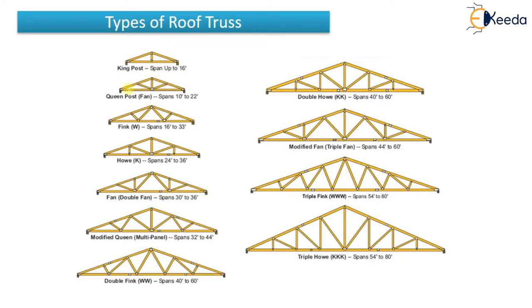Let's see which span requires which type of truss. The King post truss is generally used up to a span of 16 feet. To convert feet to meters, divide by 3.28. It is not mandatory to use only King post for 16 feet — you can also use Queen post. There are various criteria beyond just span that you must check before selecting a particular type of truss.